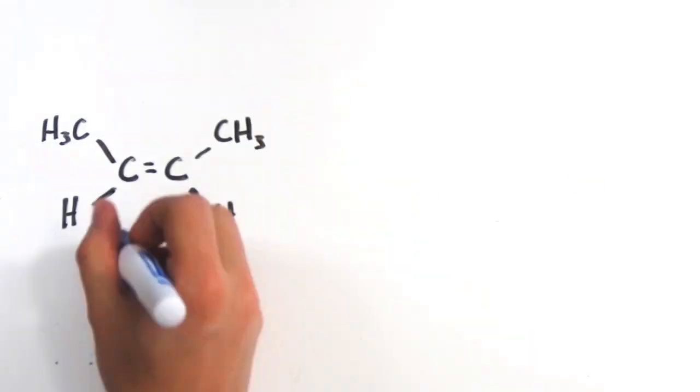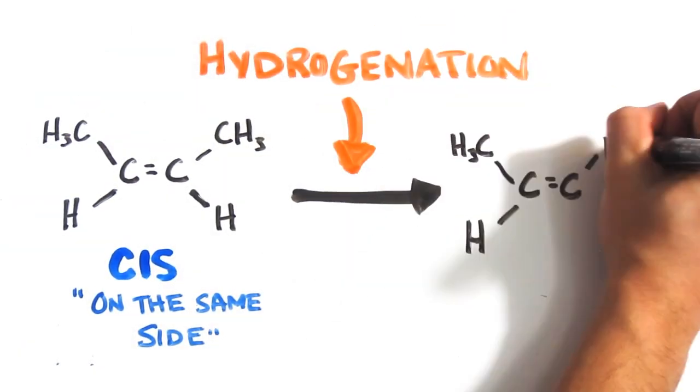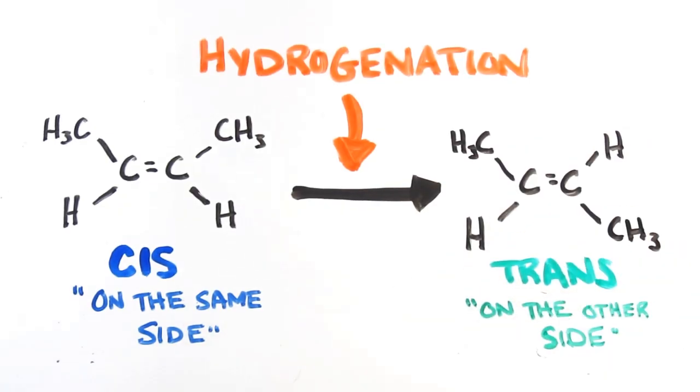You see, most of these double bonds are in a configuration known as cis bonds, but hydrogenation often flips them into something called a trans configuration. Ah, the dawn of trans fats.